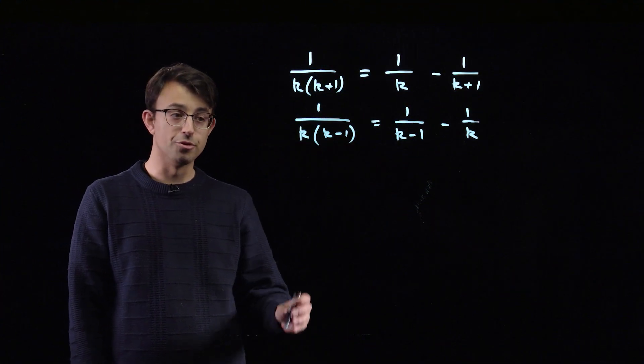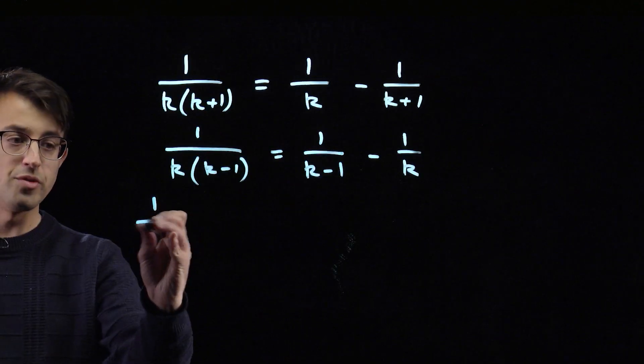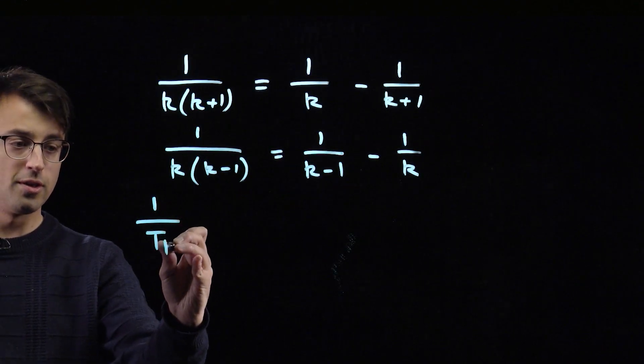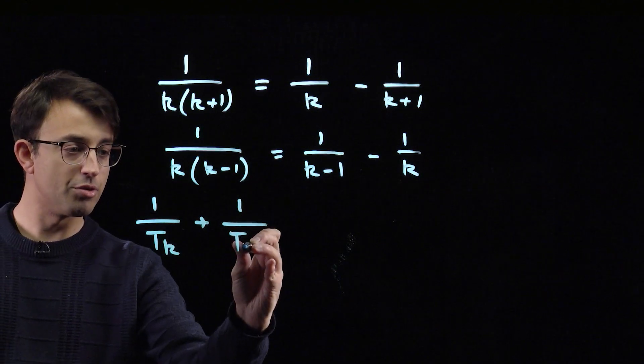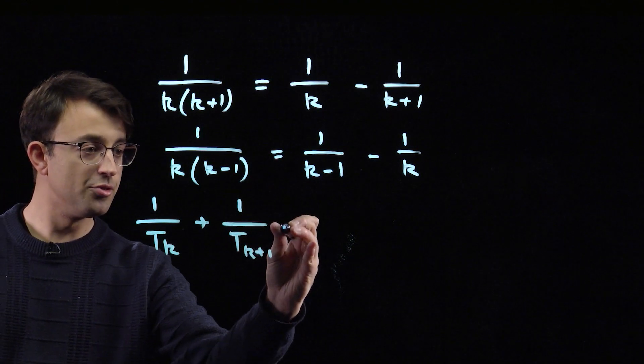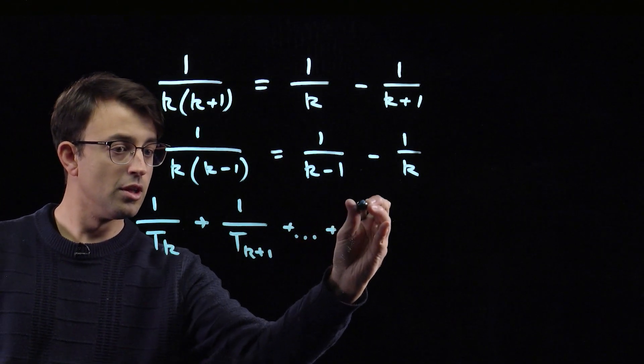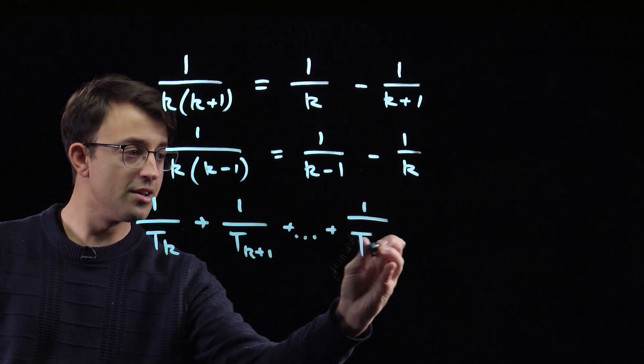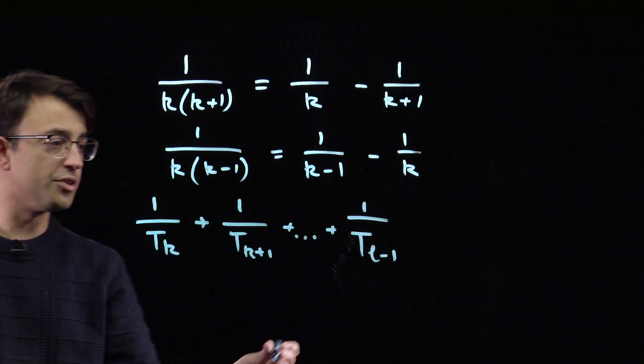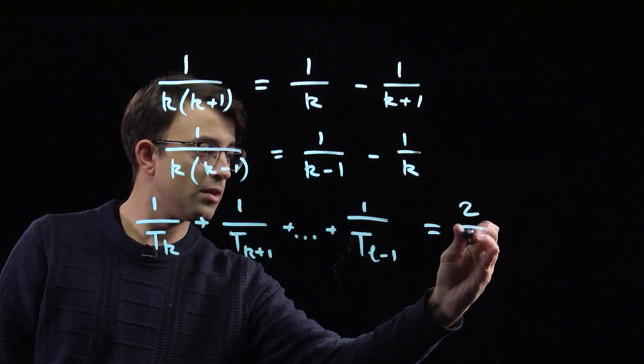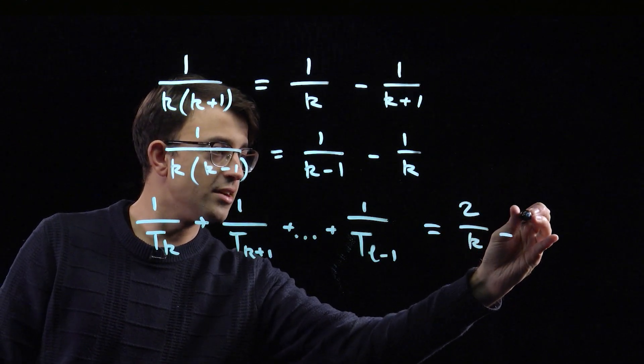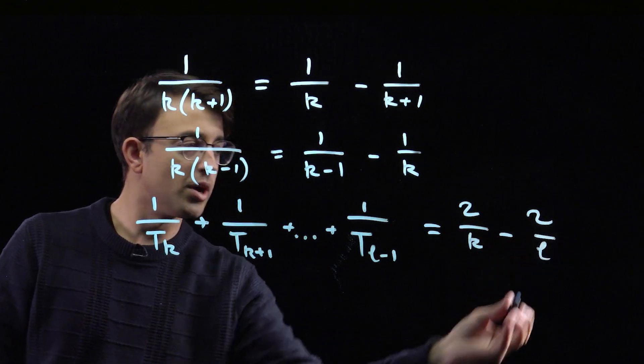Let's recap what we've been able to do so far. We've shown that a finite sum of consecutive reciprocals of triangle numbers going from 1 over tk up to 1 over tl minus 1 is equal to 2 over k minus 2 over l.